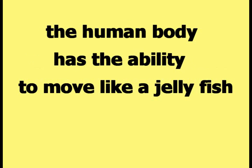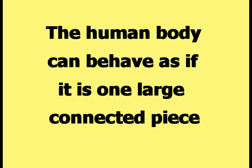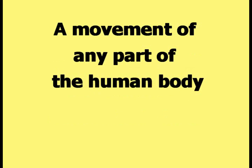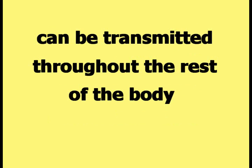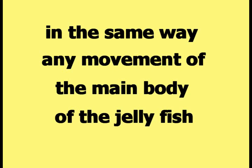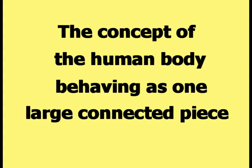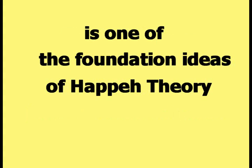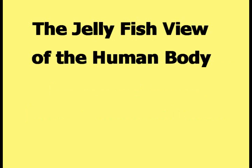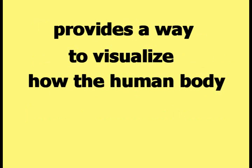Any movement of the main body of the jellyfish is transmitted from the top to the bottom of each tentacle. According to happy theory, the human body has the ability to move like a jellyfish. The human body can behave as if it is one large connected piece. A movement of any part of the human body can be transmitted throughout the rest of the body, in the same way any movement of the main body of the jellyfish is transmitted throughout the length of each tentacle. This concept is one of the foundation ideas of happy theory.